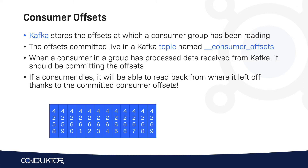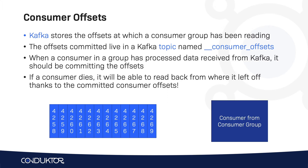For example, consider a topic partition where we have written a lot of data — we are at offset 4,258. A consumer from a consumer group reads from that topic partition, starting from the latest committed offsets, shown as the vertical blue bar, and reads happen right after those committed offsets.